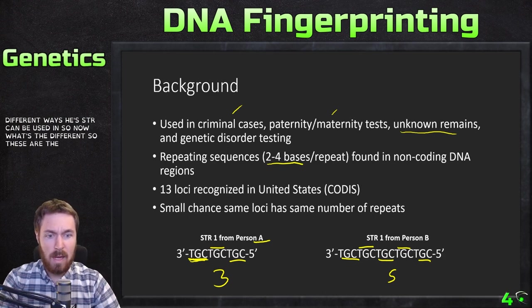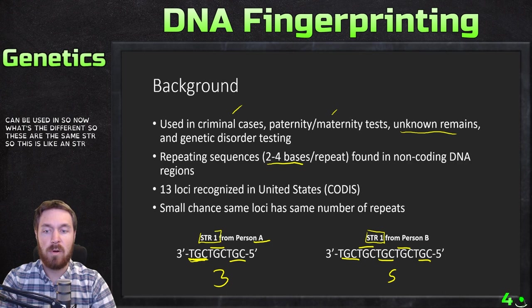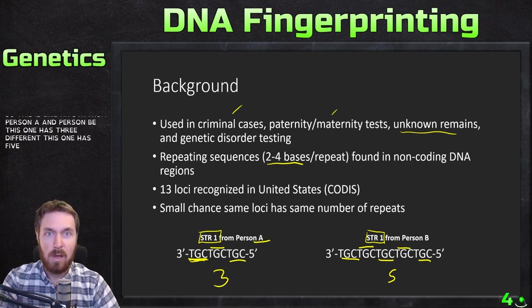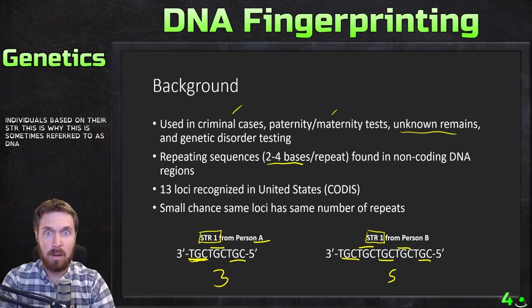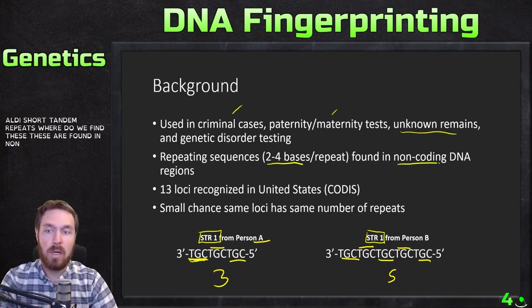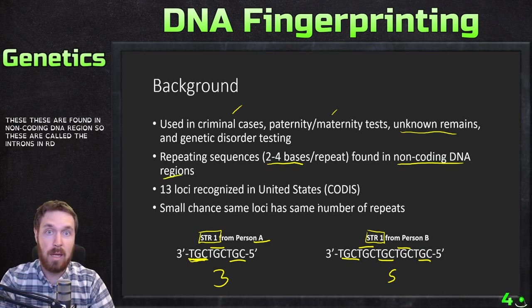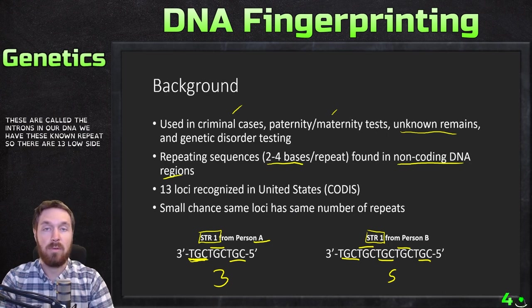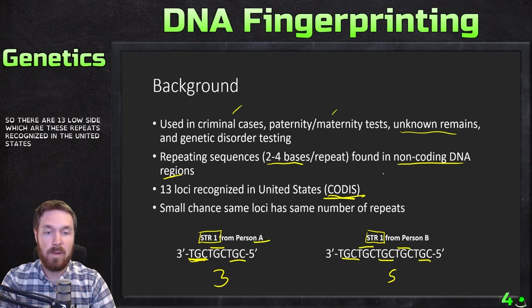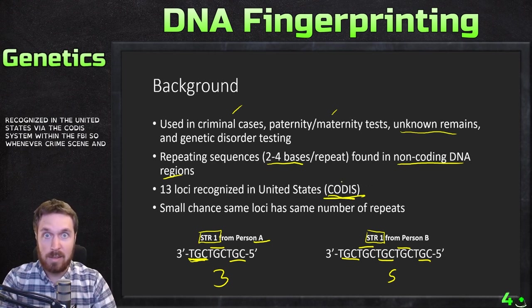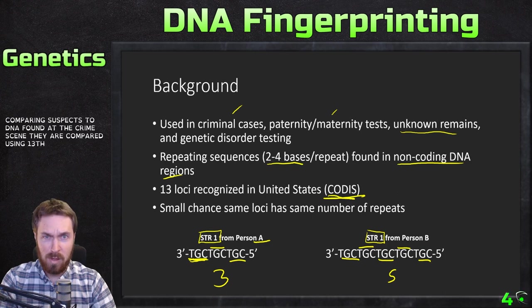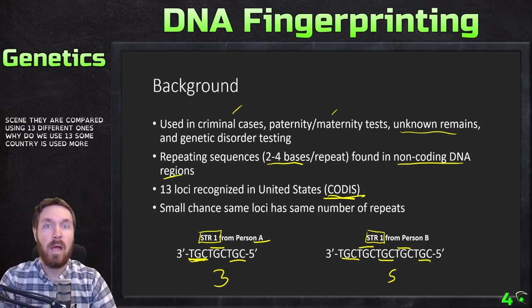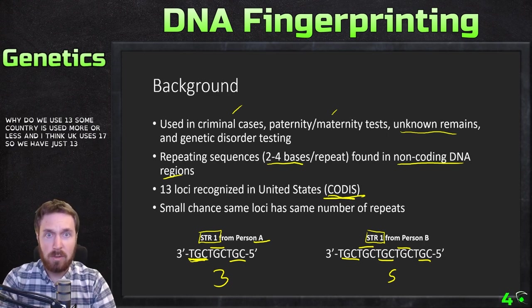Looking at the same STR from person A and person B — person A has three repeats and person B has five — we can actually distinguish these two individuals based on their STRs. This is why it's referred to as DNA fingerprinting: we all have our own fingerprint of short tandem repeats. These are found in non-coding DNA regions called introns. There are 13 loci recognized in the United States via the FBI's CODIS system.